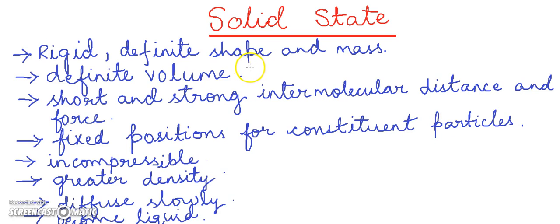Now let us see the characteristics of solid state. Solids are rigid. They have a definite shape and definite mass. They have a definite volume.